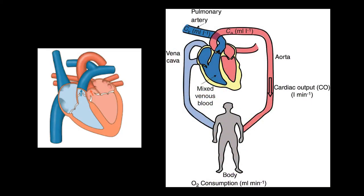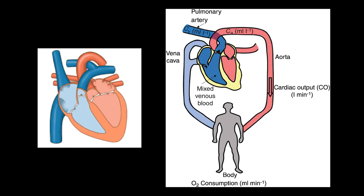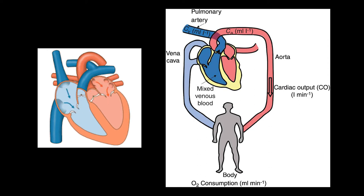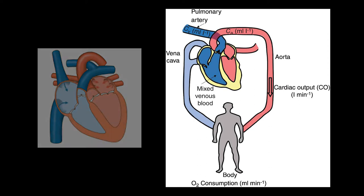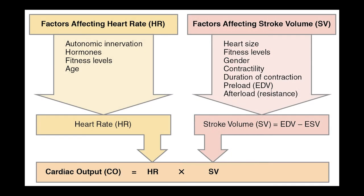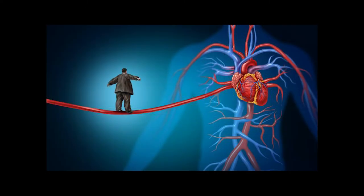So for starters, what's cardiac output? Cardiac output, or CO, is the amount of blood in liters pumped by the heart in one minute. Cardiac output is the stroke volume times the heart rate. The stroke volume is the milliliters of blood pumped per beat of the ventricles, and the heart rate is the amount of heartbeats per minute, or BPM. The average adult at rest has a cardiac output of four to eight liters of blood per minute, with an average of five to six liters per minute.